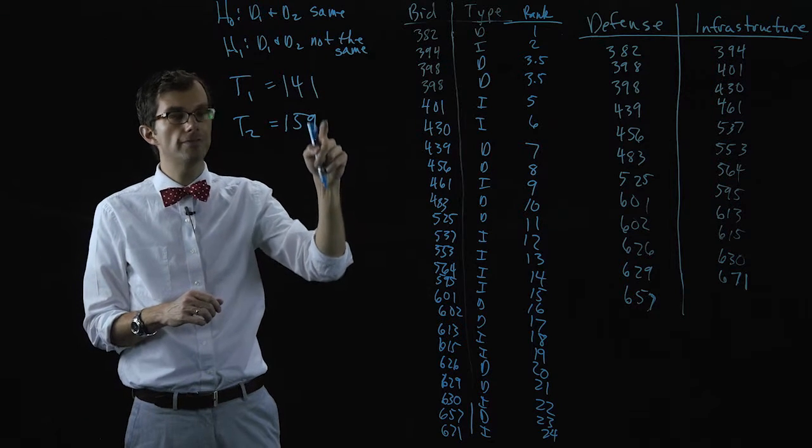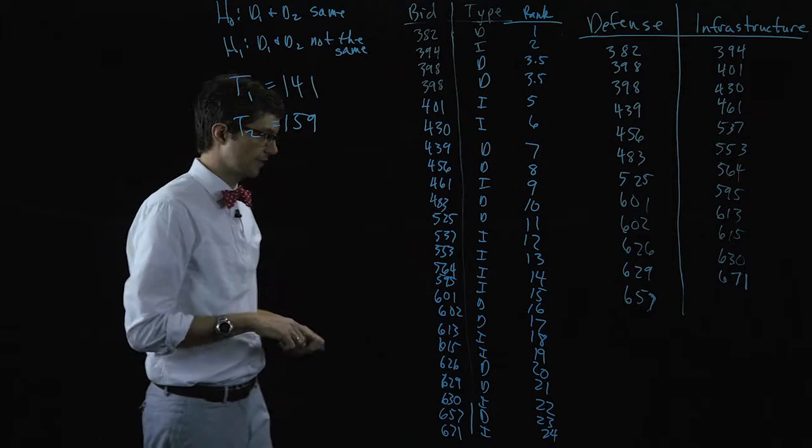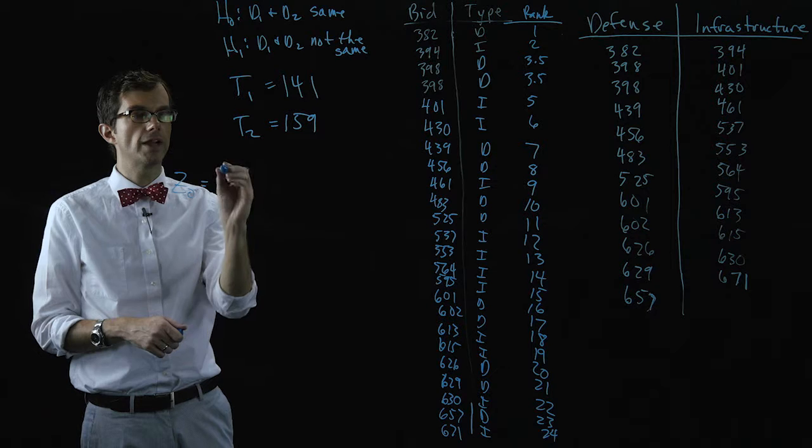So how different do these things need to be for us to reject the null? That's where the test statistic comes in. And our test statistic looks a little complicated.